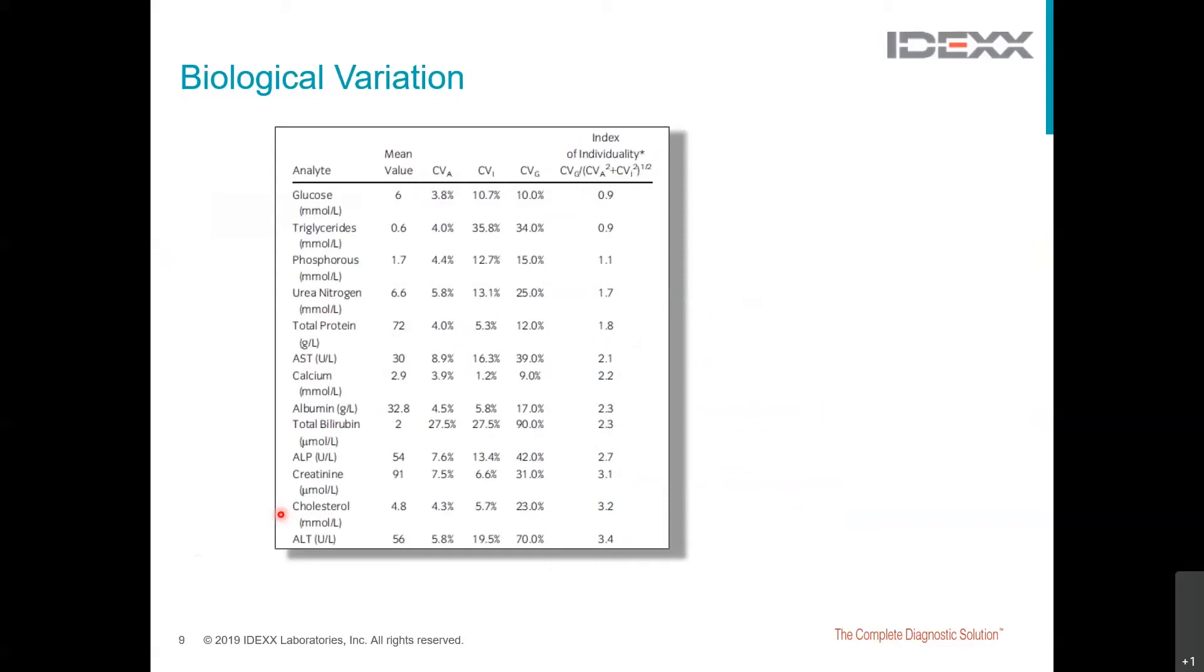For each analyte, the analytical variability, which is defined as CVA, the intra-individual variability, CVI, and the inter-individual variability, CVG, were calculated. The ratio of individual biological variation, CVI, to group biological variation, CVG, is referred to as an analyte's index of individuality. This index determines the suitability of an analyte to be assessed in relation to population or subject-based reference intervals. An index of variability of less than 0.7 indicates that comparison of an individual to a population-based reference interval is appropriate, whereas an index of variability greater than 1.7 indicates that a population-based reference interval is of limited utility.